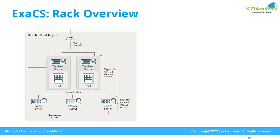Now let's look at the rack overview of Exadata Cloud Service. You have a number of virtual machines — virtual machine one, virtual machine two — and on each virtual machine you can run multiple databases. When you create an Exadata Cloud Service you can provision and expand up to 32 database servers. These database servers are the machines you expand, and within them you deploy the databases. When you deploy a database on Exadata Cloud Service it runs across all the configured virtual machines, though you can start or shut down individual virtual machines.